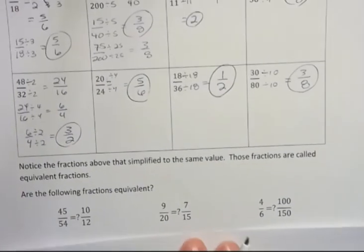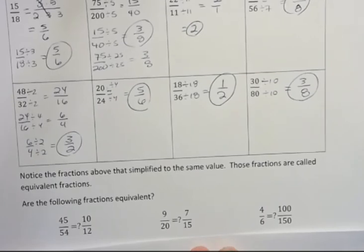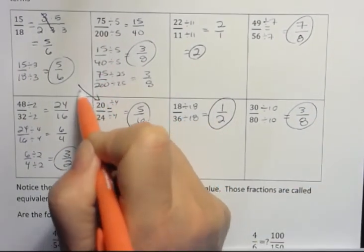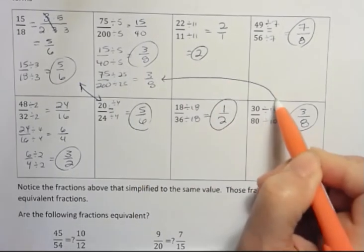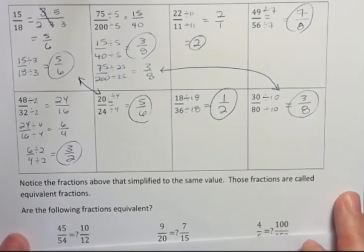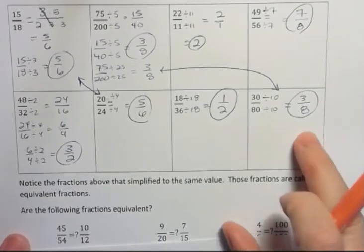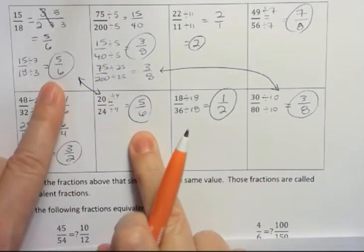Notice that some of the fractions above simplified to the same value. For instance, this is 5 sixths. The first one that I did was 5 sixths, but also this one was 5 sixths. They have the same value. Also 3 eighths here and 3 eighths there. So those fractions, when they simplify to the same value, are called equivalent. They have the same value when they're reduced to lowest terms. These were both 3 eighths or both 5 sixths.